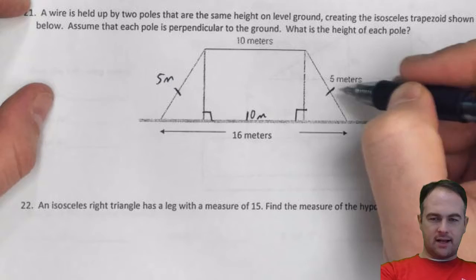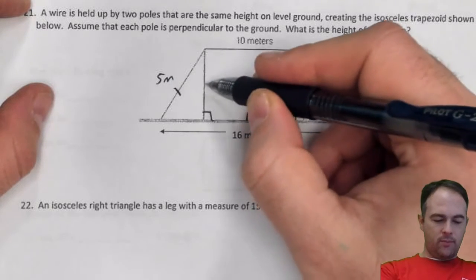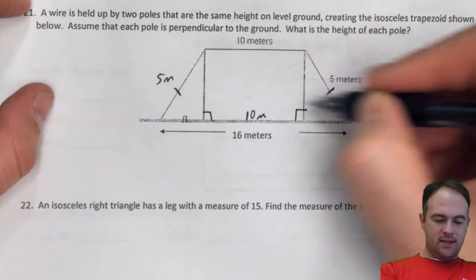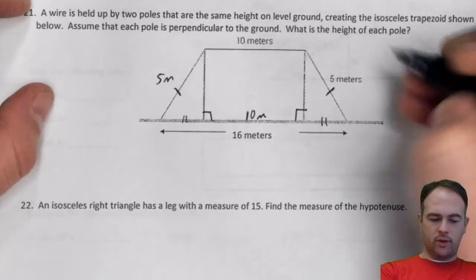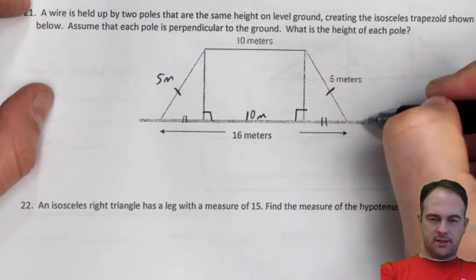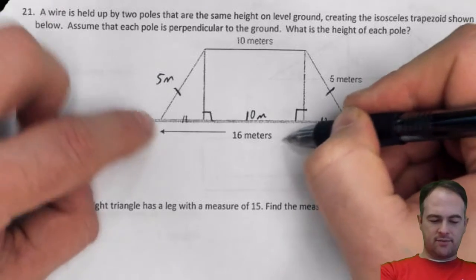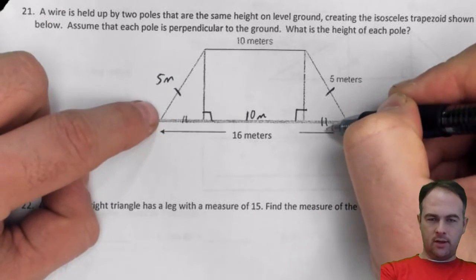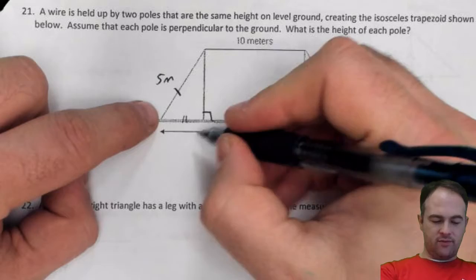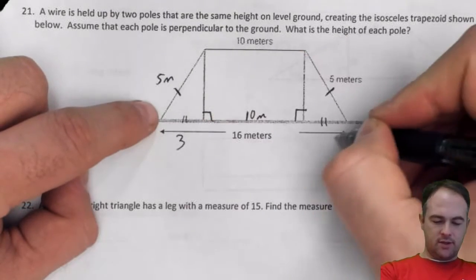And since it's an isosceles trapezoid, that means that these pieces here must also be congruent. So the whole thing is 16, the middle section is 10, leaving 6 left over for the wings over here, and they're the same, so 6 divided by 2, each of these is 3.